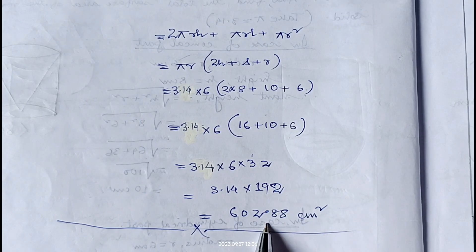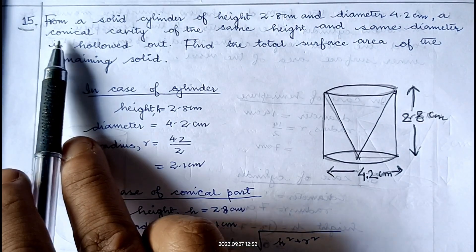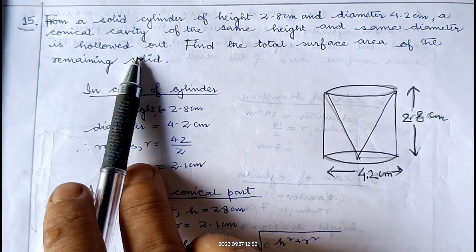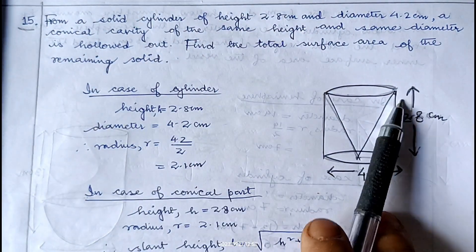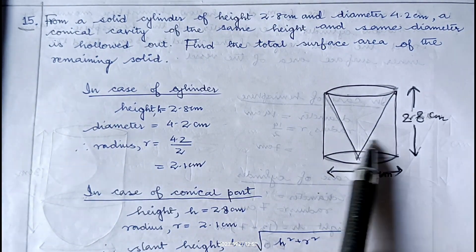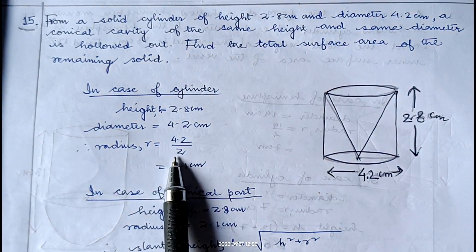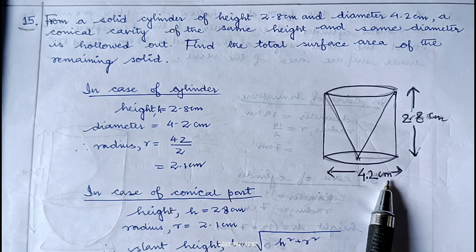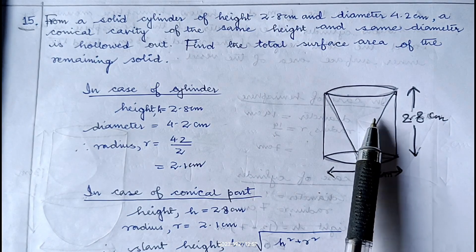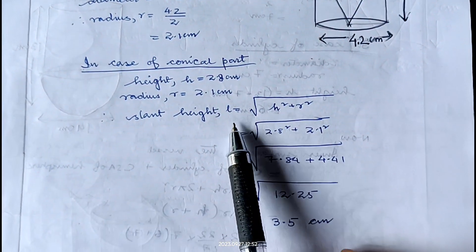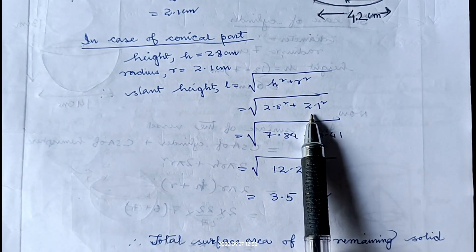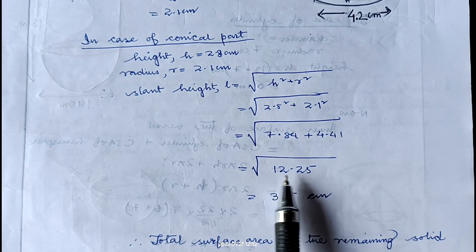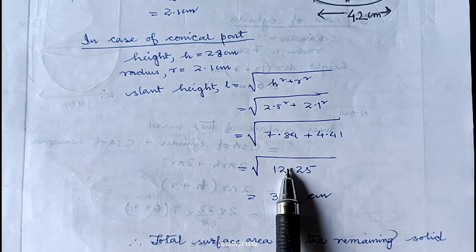Question number 15: from a solid cylinder of height 2.8 centimeter and diameter 4.2 centimeter, a conical cavity of the same height and diameter is hollowed out. Find the total surface area of the remaining solid. Cylinder has height 2.8 and radius 2.1. Cone also has height 2.8 and radius 2.1. Slant height l equals root over (2.8 squared plus 2.1 squared) equals root over (7.84 plus 4.41) equals root over 12.25 equals 3.5 centimeter.